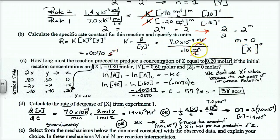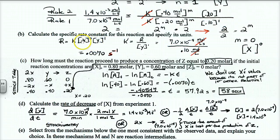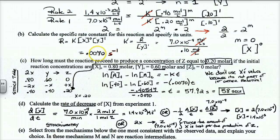For first order reactions, s to the negative 1 is going to be your unit, but it changes depending on whether you have zero, first, or second order. You can just solve for k by plugging in the values from one experiment — pick one, put the rate in from that same experiment, solve for k. This is free money: they give a point for the value and a point for the right units. That's an easy two points.